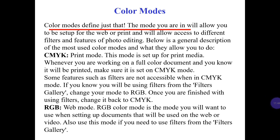There are CMYK and RGB. CMYK is print mode — this mode is set up for print medium. Whenever you are working on a full-color document that will be printed, make sure it is set to CMYK mode. Some filters such as those in the Filter Gallery are not accessible when in CMYK mode. If you need to use filters from the filter gallery, change your mode to RGB, and once finished, change it back to CMYK.